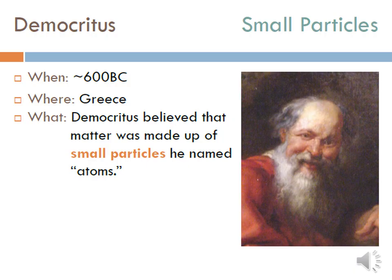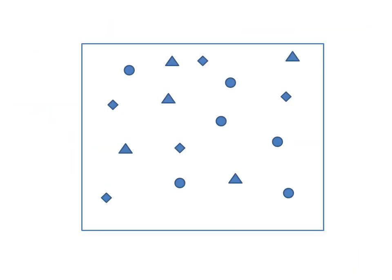First up on our journey through the atomic structure is an ancient Greek philosopher named Democritus, around 450 to 600 BC. He believed that all matter was made up of small particles he called atoms. He thought atoms varied in size, shape, mass, position, and arrangement — solids were small pointy atoms, liquids were large round atoms, and oils were small round atoms that could slip past one another. Take a moment and draw in your guided notes what Democritus thought the atom looked like.